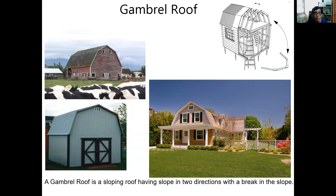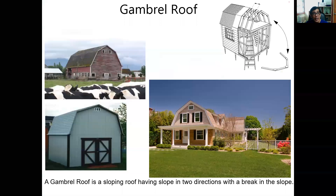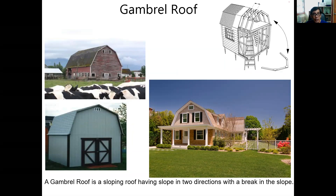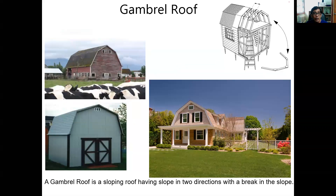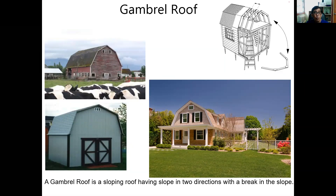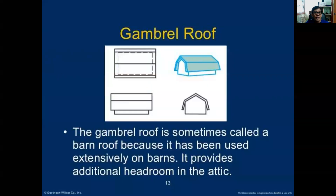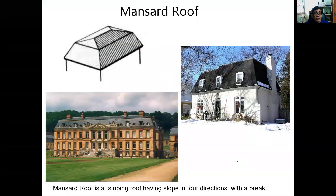The gambrel roof is a sloping roof with slope in two directions and a break in the slope. Often used in barns in the United States, it is now being revived for classical homes. Dormer windows are commonly incorporated as part of the gambrel roof for ventilation and natural light to the attic or second floor. A gambrel roof is sometimes called a barn roof and provides additional headroom in the attic.